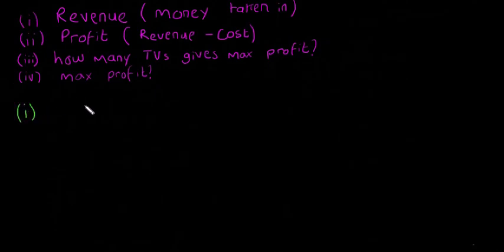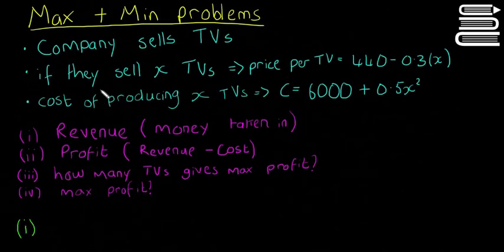So the revenue, the money taken in. So think about it. If you sell 10 TVs and each TV costs 10 euro, then you're going to make 100 euro, yeah? Because 10 by 10 is going to be 100. That's the way we're going to think about it. It's the price of each TV multiplied by how many TVs you sell.